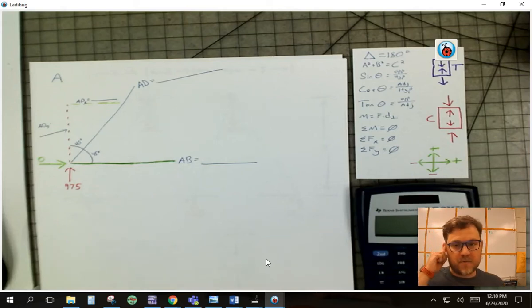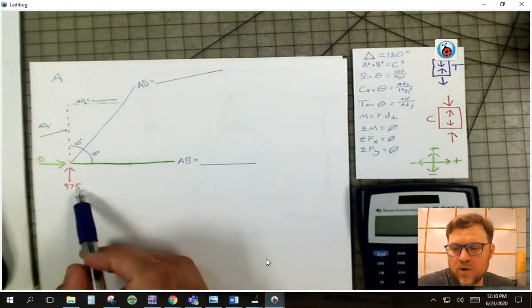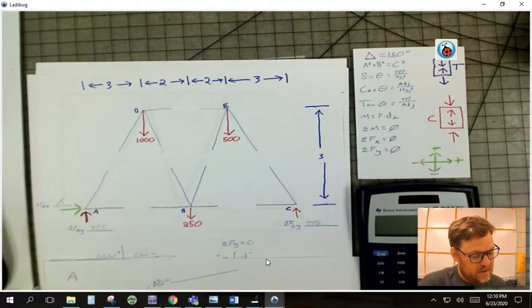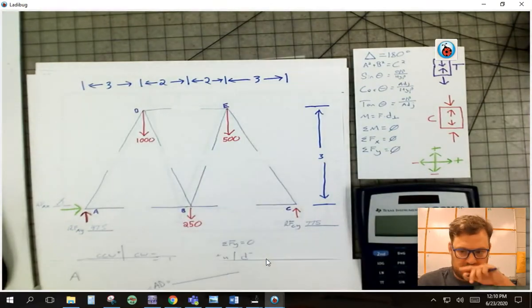All right, now we've solved for the reaction forces and I'm going to show you how to do the method of joints. So start here and I brought over, I'm looking at joint A first. Let me just go back to this and how do I know which joint I want to start at?